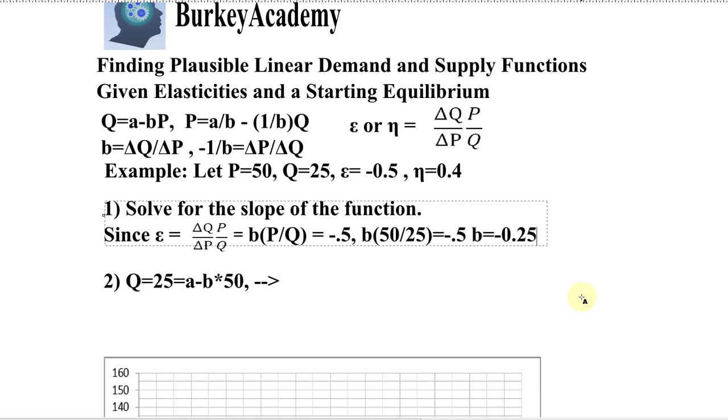The second step after you figure out the slope is to figure out the y-intercept. So in the second step, we realize that the quantity equals 25. So I'm just substituting in 25 for the quantity here, and that equals the y-intercept minus b. Well, we solved for that. We know that b now is minus 0.25 times 50.